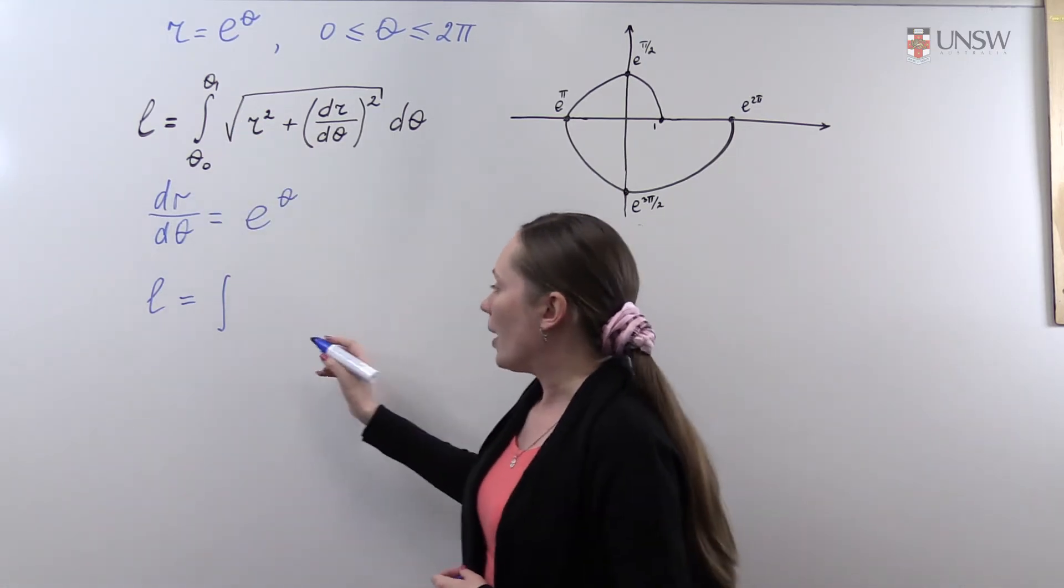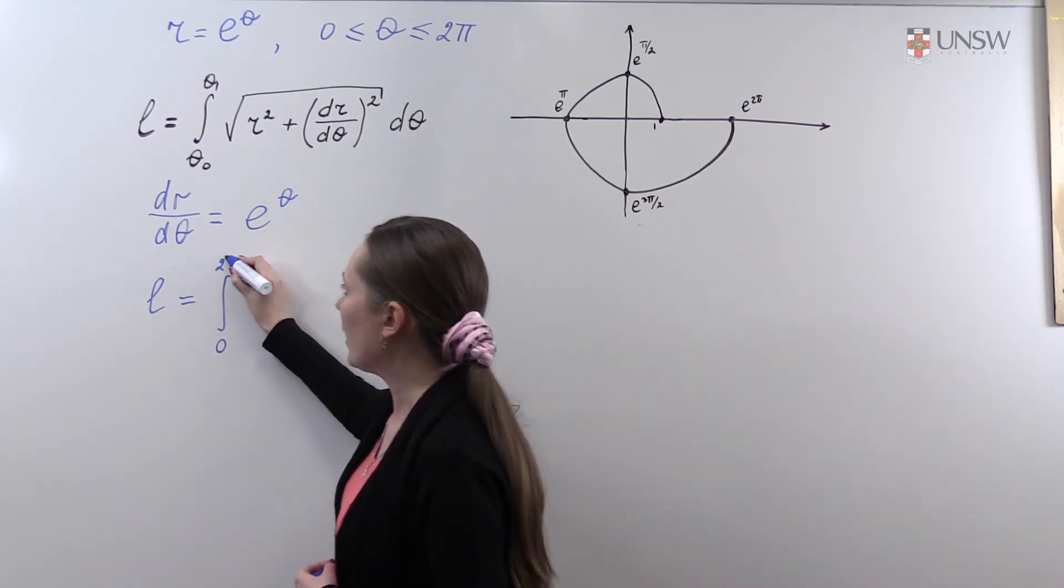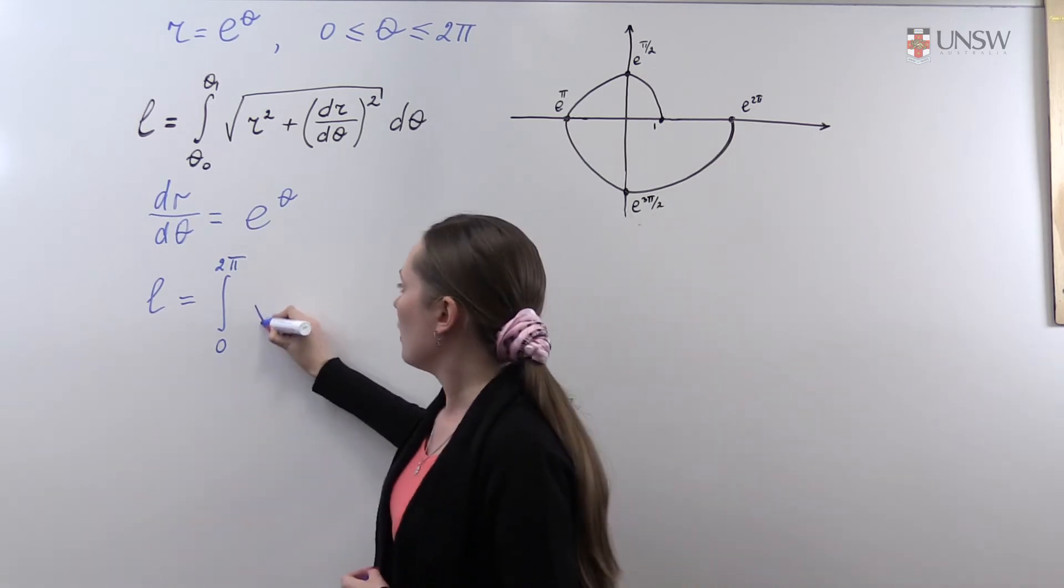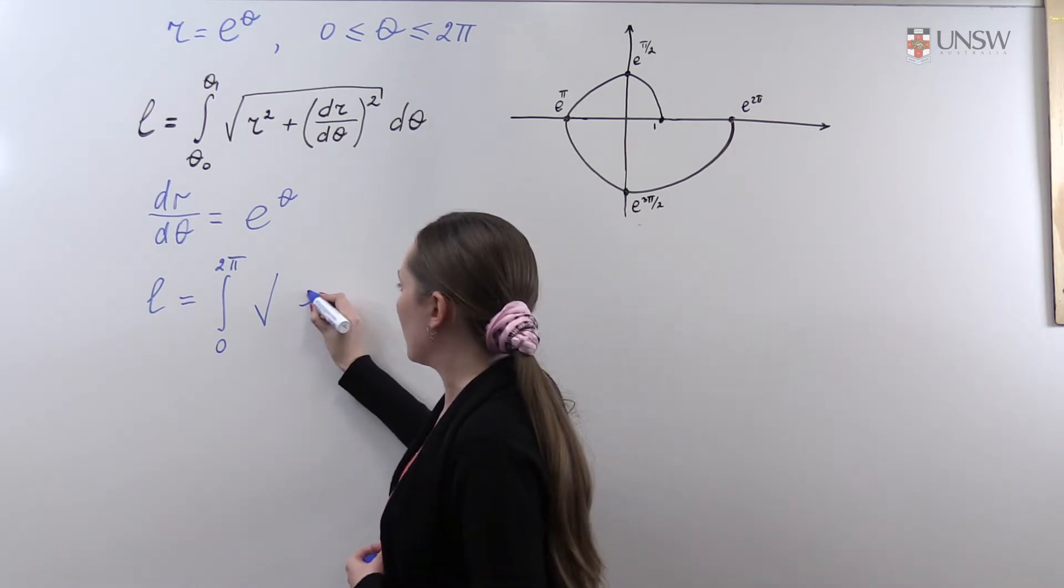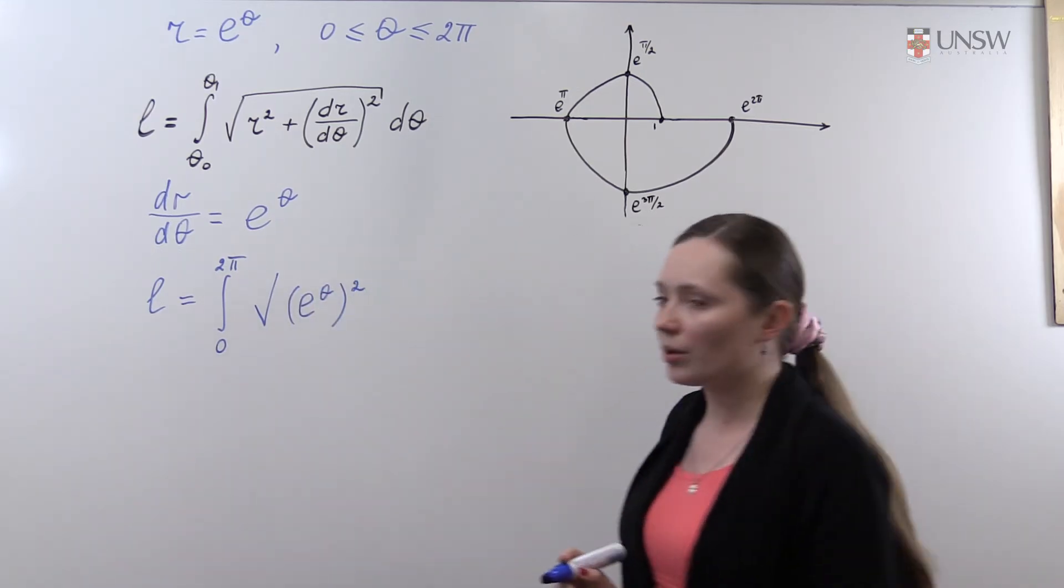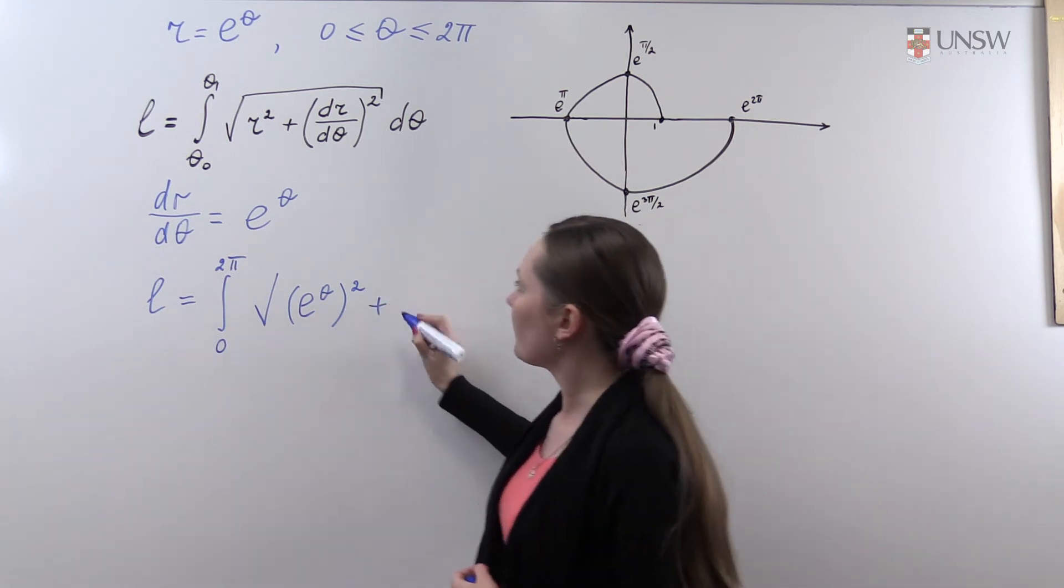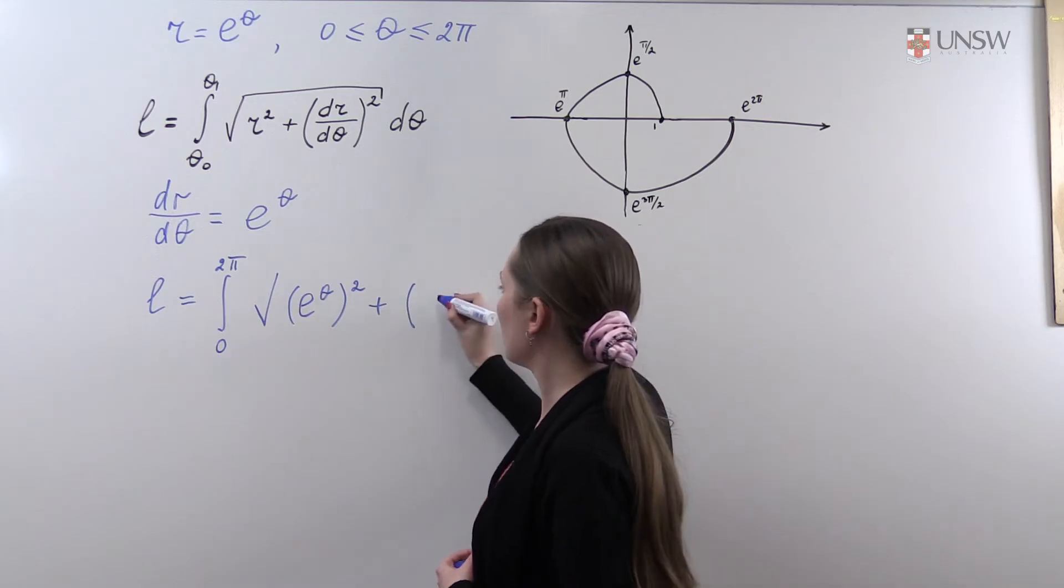The integral goes from 0 to 2π. R equals e to the theta, so let's write here e to the theta squared, plus the derivative is also e to the theta, so here we also have e to the theta squared dθ.